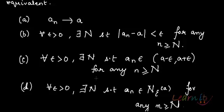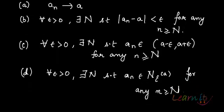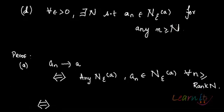The equivalence also holds with the statement: for all ε > 0 there exists a capital N such that a_n is an element of the ε-neighborhood of a, for any n ≥ N. Let us try to prove this now.